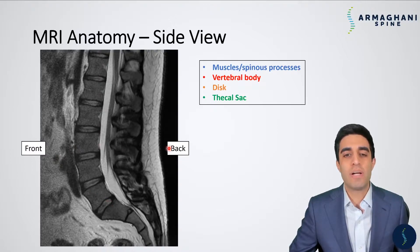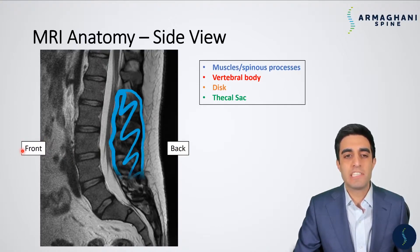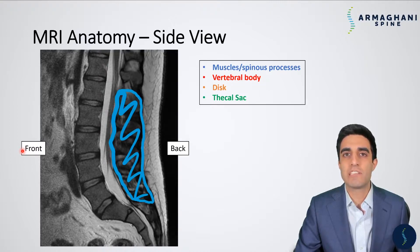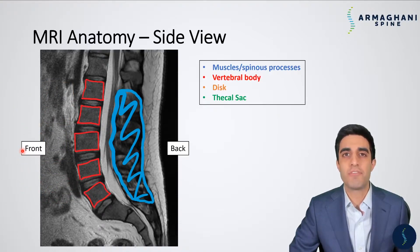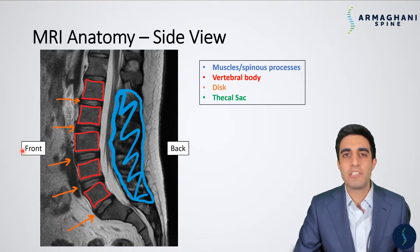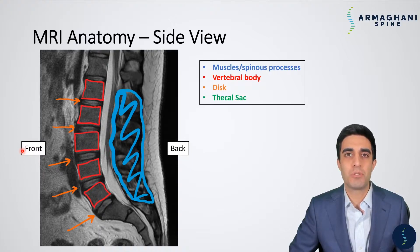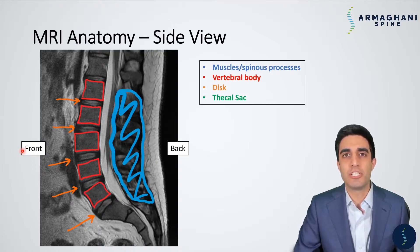To orient you, the skin of your back is on the right side of the screen, and the front of your body is on the left. The muscles and spinous processes are highlighted here in blue — these are the bones you can feel when touching your lower back, and the dark spaces in between are the muscles and ligaments connecting the bones. In red are the vertebral bodies, which are the building blocks of your spinal column. These bones stack up on top of each other, and in between them you have the discs — a rubbery material that gives you cushion and contributes to flexibility.